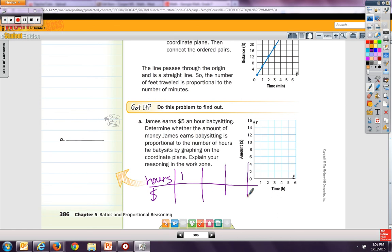One hour, two hours, and three hours. So he earns $5 an hour. That's important. So for one hour, he earns $5. Two hours, he earns $10. Three hours, he earns $15.